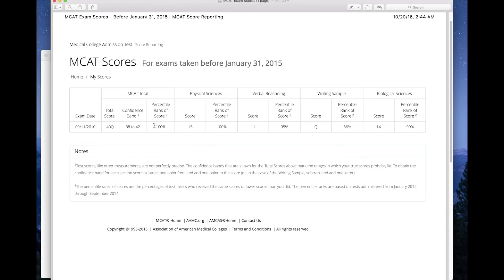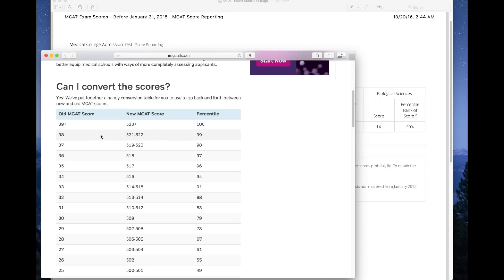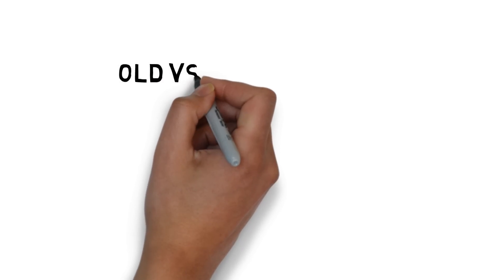Here's my score report. It says 100th percentile, but that's because they rounded up. I think it's supposed to actually be 99.9 percentile. This score I got, which is 40, is equivalent to approximately 523 and above on the new MCAT based on the online conversions and percentiles that are available.